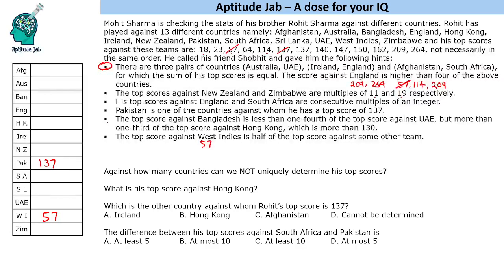There are three pairs of countries for which the sum of top scores is equal, so we need to find three pairs of numbers that add up to the same total. This requires hit and trial, but we do it systematically — not randomly. Looking at the numbers, most values are in the range 100 to 162, so the sum of any pair is likely above 200, probably around 250 or higher.